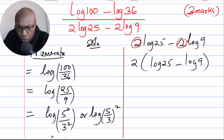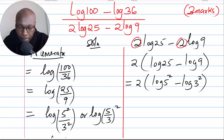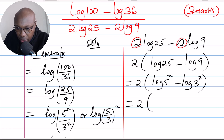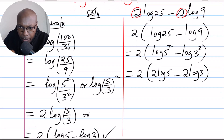After factoring out 2, notice that log of 25 can be written as log of 5 squared, and log 9 can be written as log 3 squared. Applying the power law again, log of 5 squared becomes 2 log of 5, and log 3 squared becomes 2 log of 3. This is why the basic laws are very important when approaching this question.